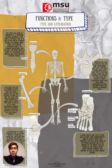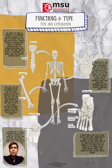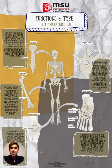The next type is the irregular bone. An irregular bone does not have any easily characterized shape and therefore does not fit any other classification. These bones tend to have complex shapes, like the vertebrae that support the spinal cord and protect it from compressive forces. Many facial bones, particularly those containing sinuses, are classified as irregular bones. Finally, the sesamoid bone is a small, round bone shaped like a sesame seed. It forms in tendons where a great deal of pressure is generated in a joint, protecting tendons by helping them overcome compressive forces. Sesamoid bones vary in number and placement but are typically found in tendons of the feet, hands, and knees. The patellae are the only sesamoid bones found in common with every person.